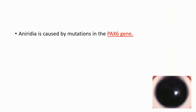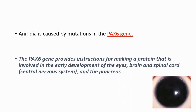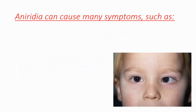Aniridia is generally caused by mutations in the PAX6 gene. This gene provides instructions for making a protein that is involved in the early development of the eyes, brain, spinal cord, and lastly the pancreas. This protein is important, and aniridia can cause many symptoms.